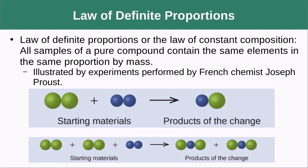Next, we have the law of definite proportions, or the law of constant compositions. This states that all samples of a pure compound contain the same elements in the same proportion by mass. We can see that this is illustrated here, where we have equal numbers in the first example of green balls and blue balls, and we wind up with a product that has equal numbers of green and blue balls.